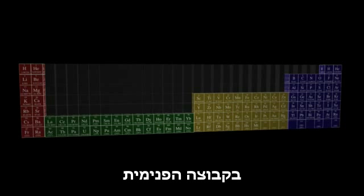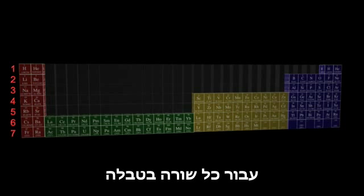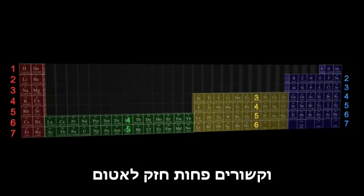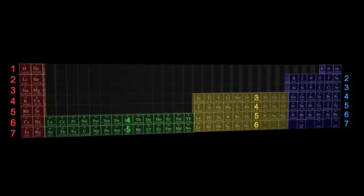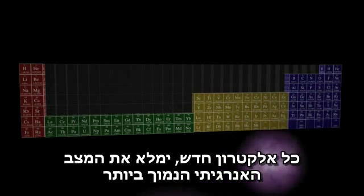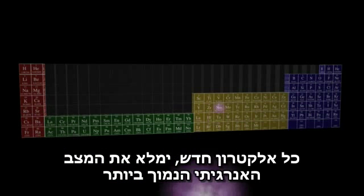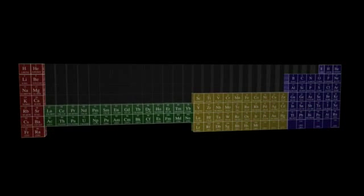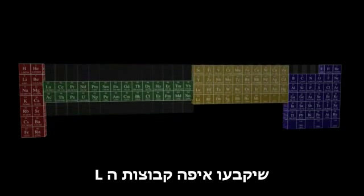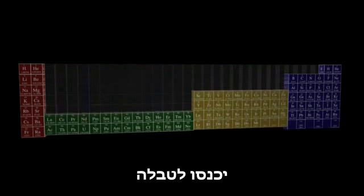In a given group, N increases by one for each row in the table. So the outer electrons in the elements directly below other elements have more energy and are less tightly bound to the atom. As we add electrons one after another to atoms, each new electron occupies the lowest available energy state. And so it is the energy levels of the electrons' orbitals that determine where the different L groups fit into the table.